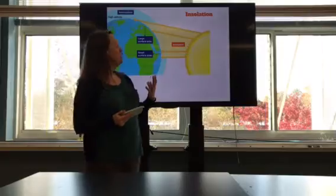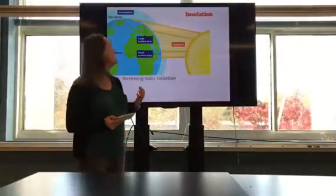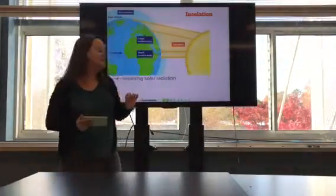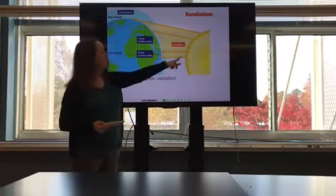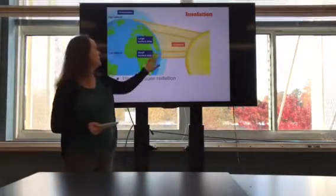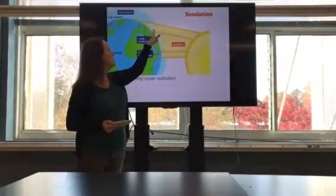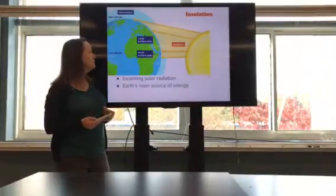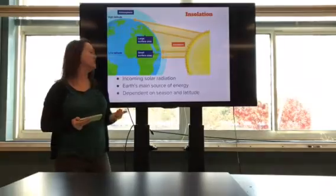All right, so the term that we use for the amount of sunlight or incoming solar radiation is insolation with an O, not a U like insulation. And as you can see, the most direct sunlight or insolation occurs at the equator, so it covers a smaller surface area, whereas towards the poles where it's more of an indirect angle, it covers a larger surface area. So we know that solar radiation is Earth's main source of energy.